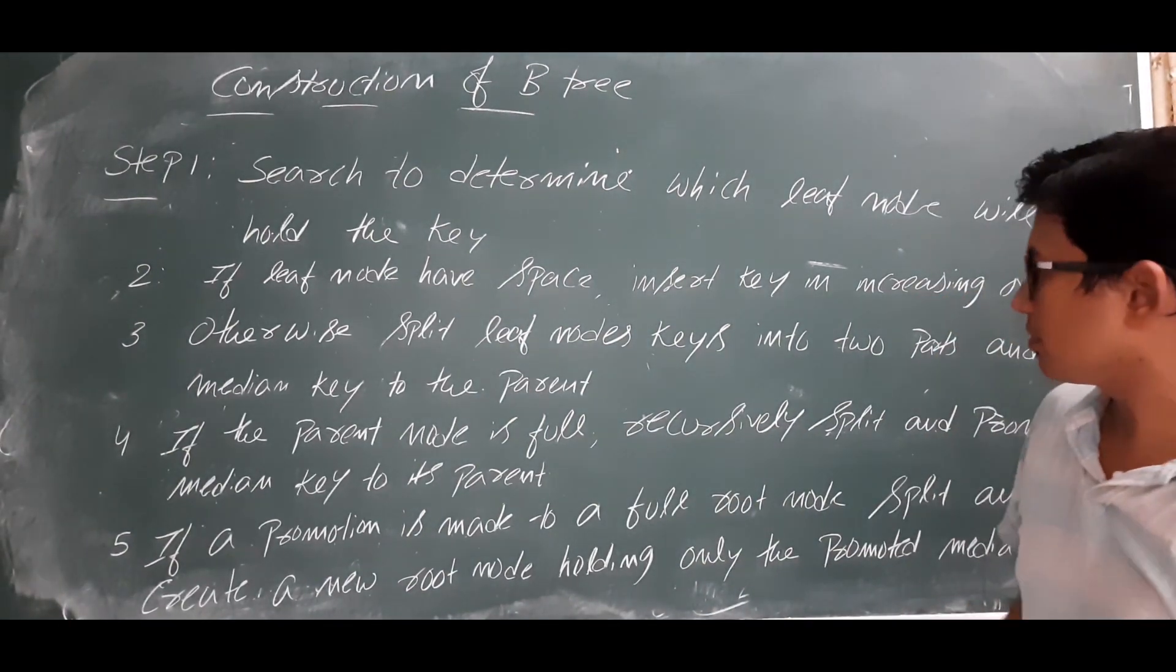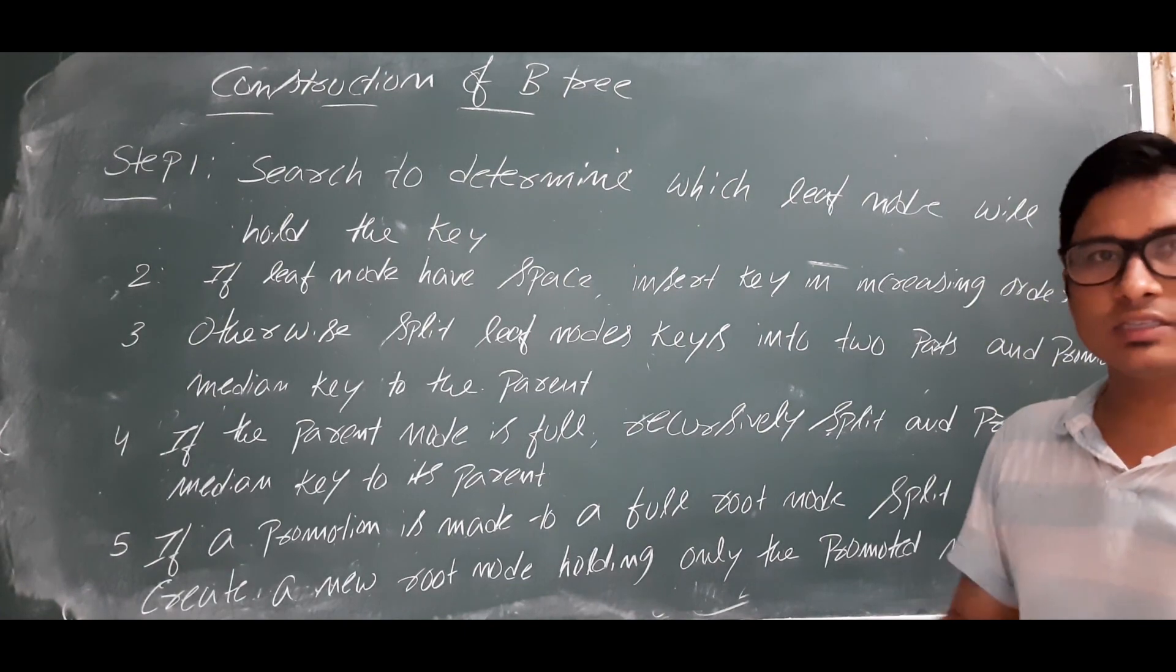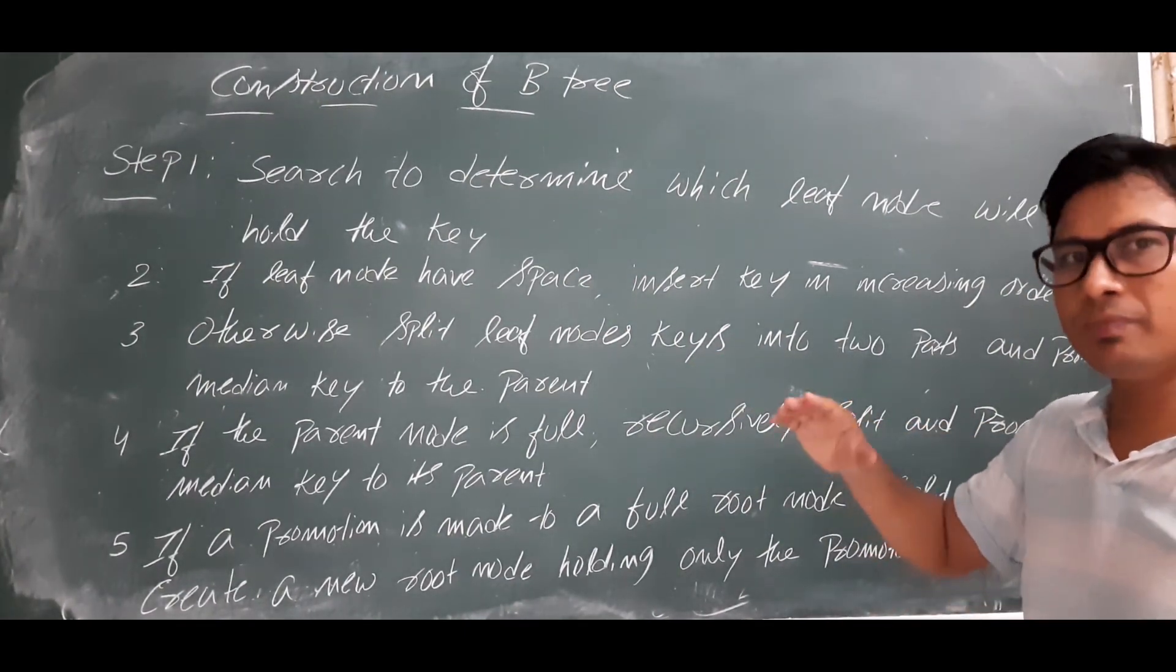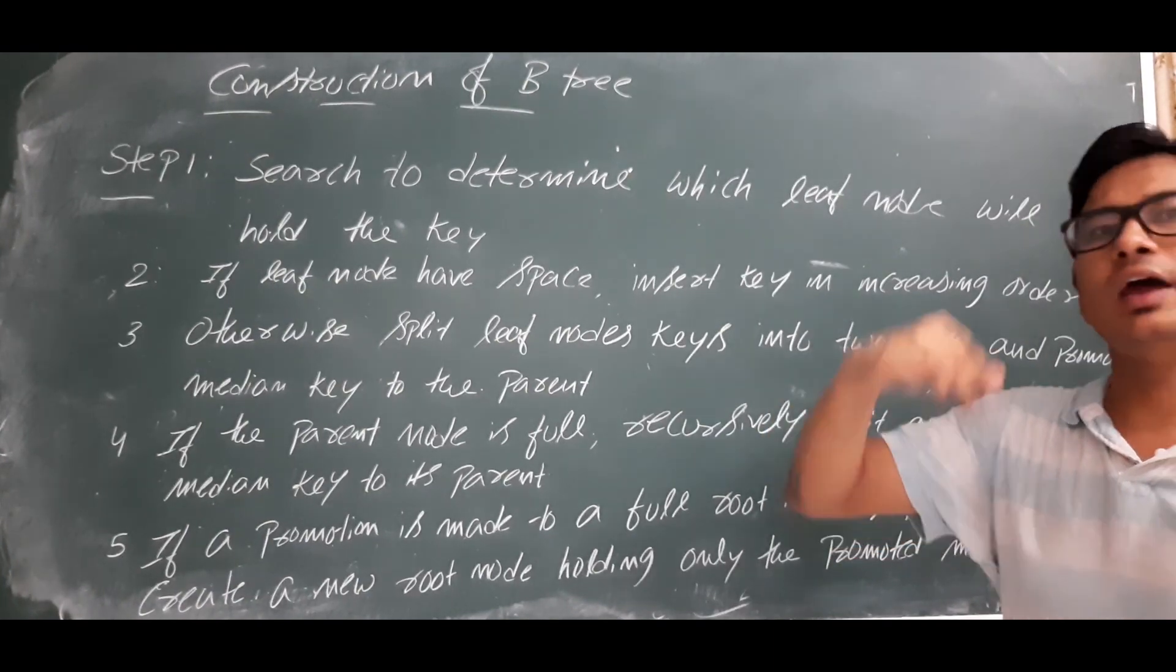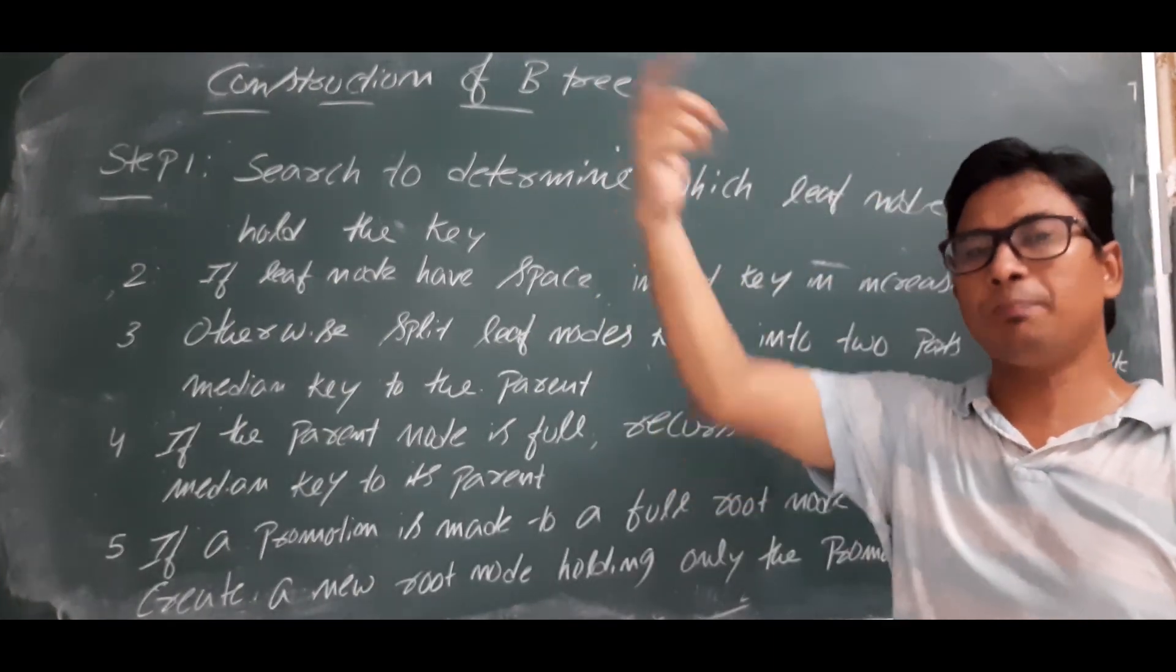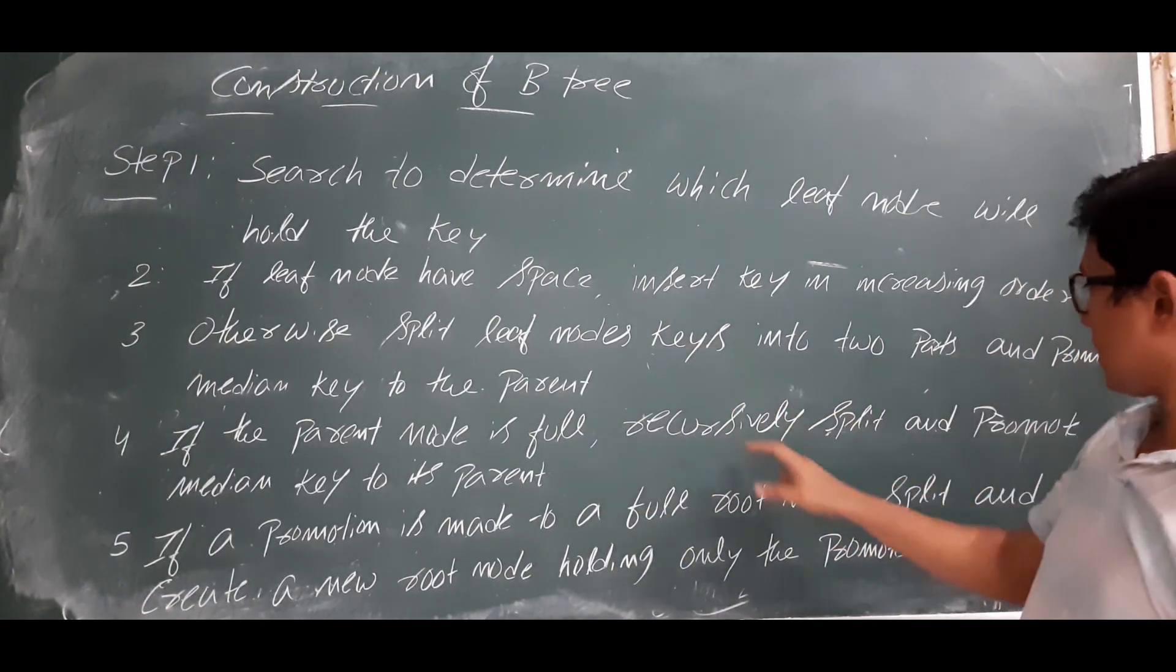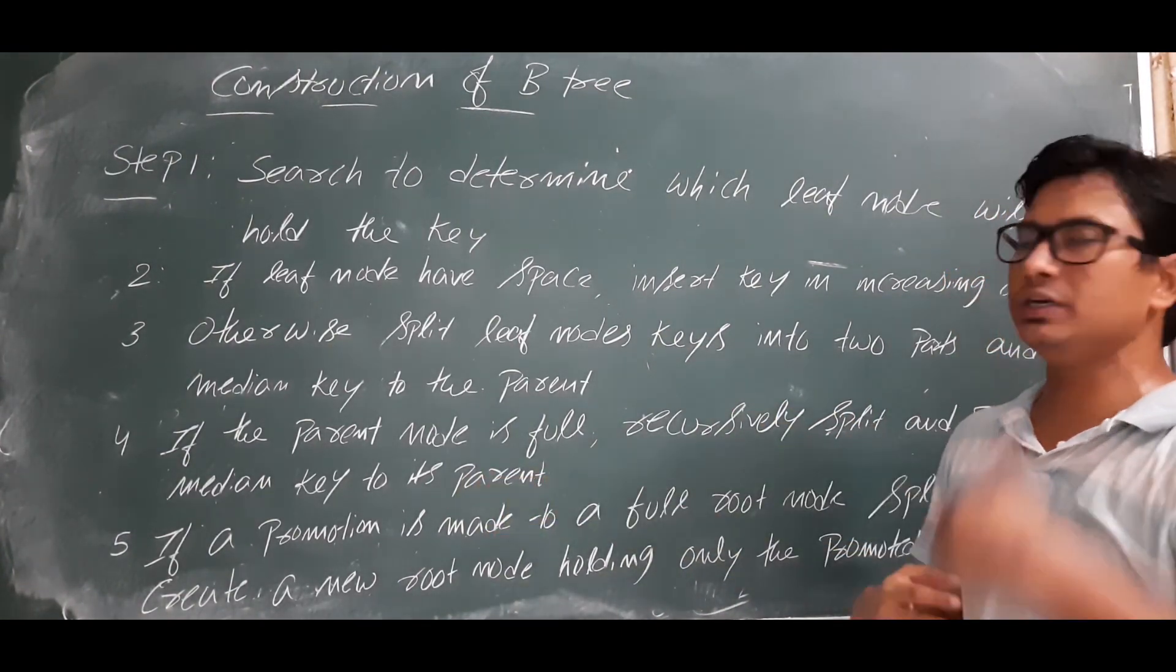Step 4: If the parent node is also full - in this case if the leaf node is full we have calculated the median and we are promoting it to the parent node. If the parent node itself is full, then recursively split and promote the median key to its parent. You have to do step 3 again and again.